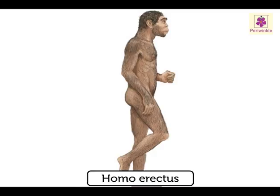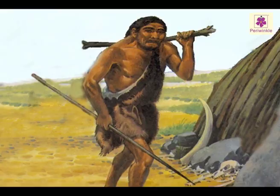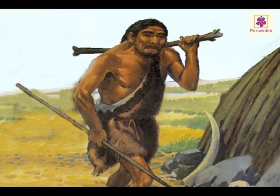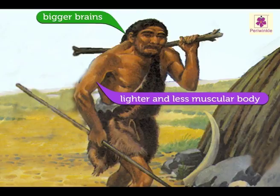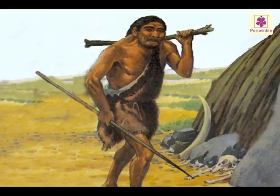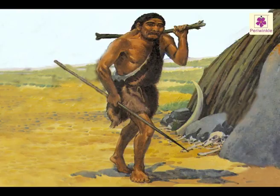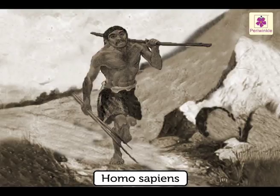Men who looked like today's human beings appeared around 40,000 years ago. Their brains were much larger and their bodies were lighter and less muscular. Because of this, they could adapt to the Earth's changing climate and conditions more easily.